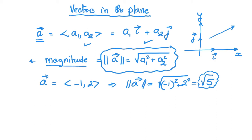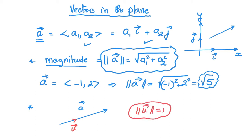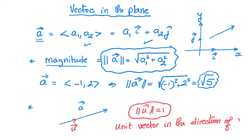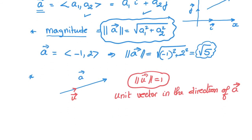That gives us the square root of 5. The magnitude of a vector is always either 0 or a positive number. We are often interested in finding a vector in the same direction as a but with a magnitude of 1 — this is what we call a unit vector in the direction of a.